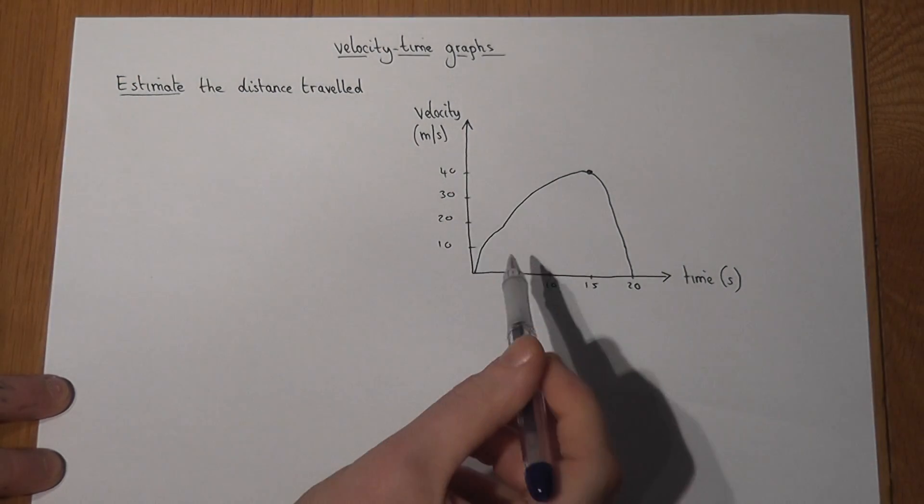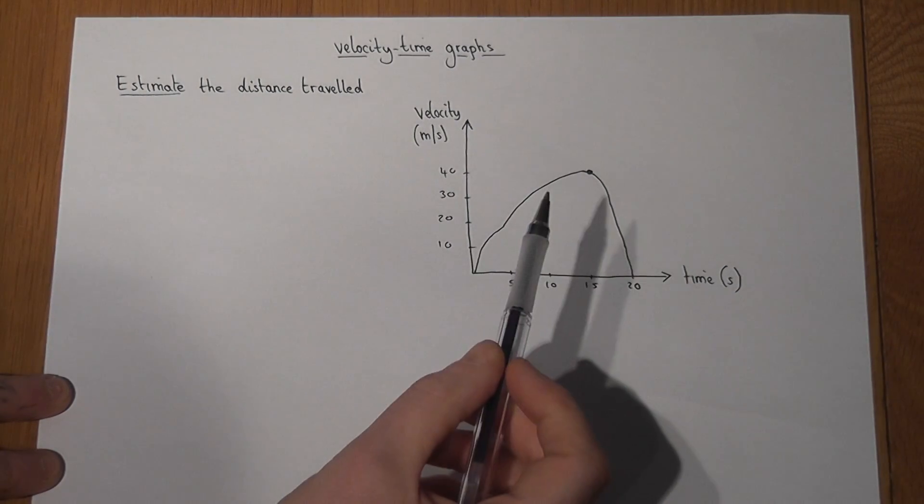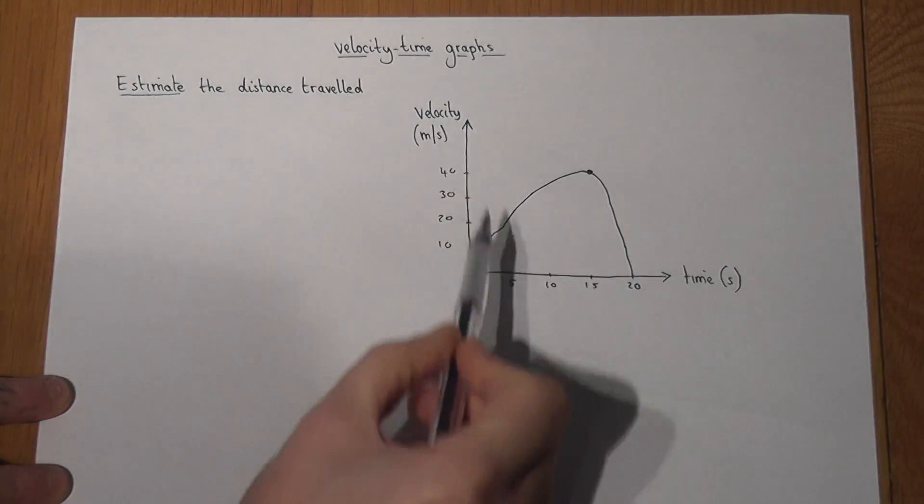This graph shows how fast somebody's going at a given time, and their speed or velocity is always changing.